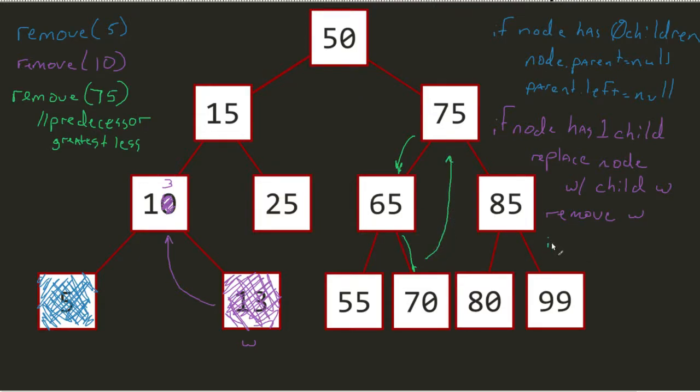So if node has two children, replace with greatest lesser. That's not the only implementation of the removal process.